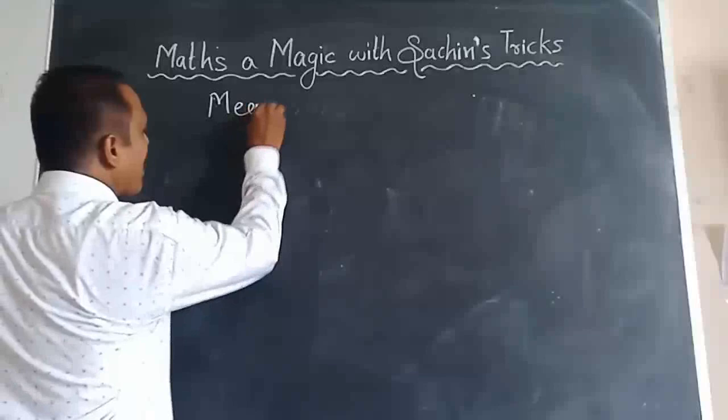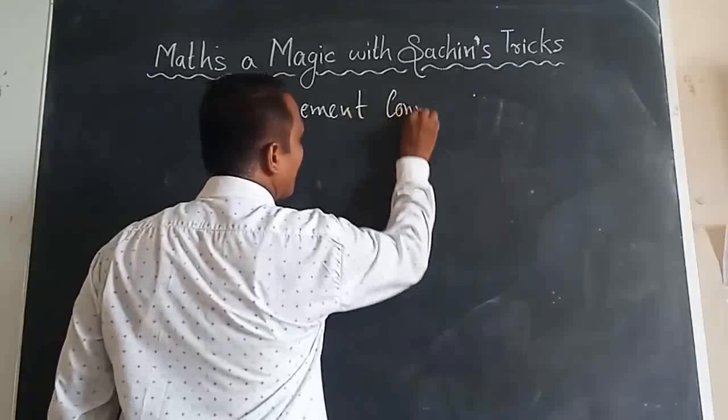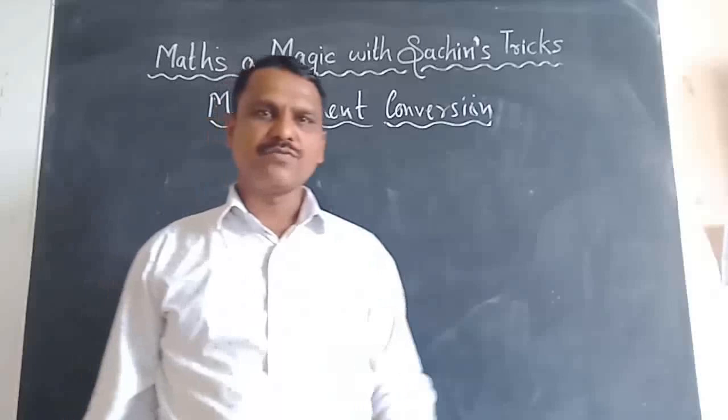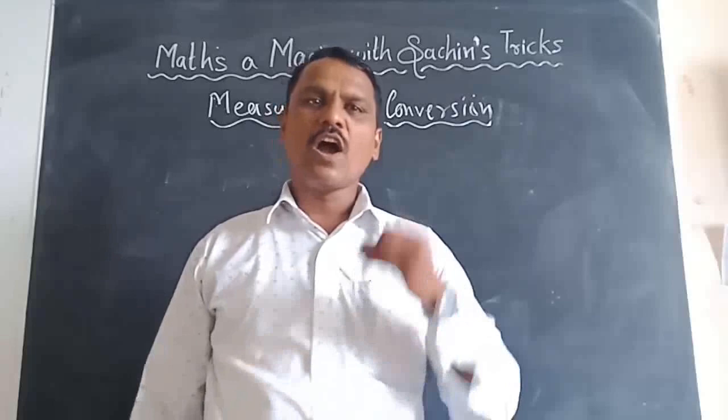Today's topic is Measurement Conversions. In measurement conversions, we have three types of units: Length, Capacity, and Weight. Let's see how many formulas are there in each.